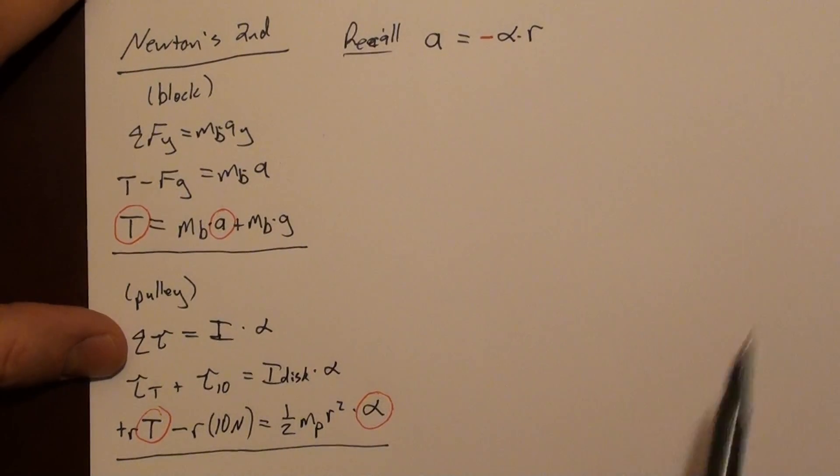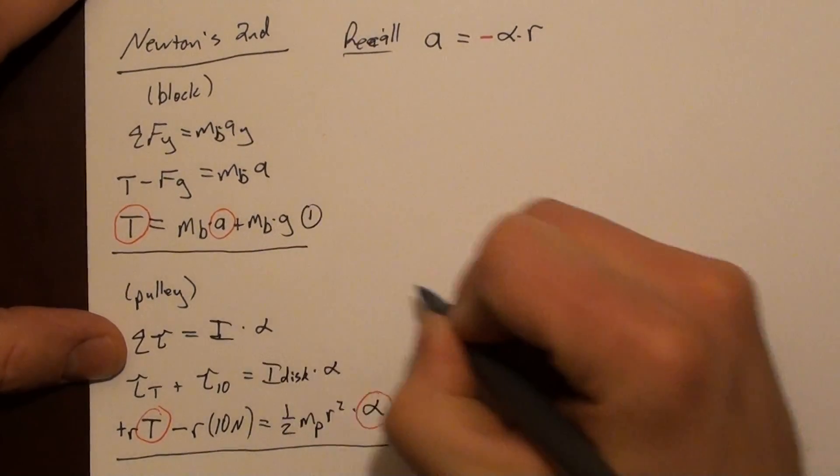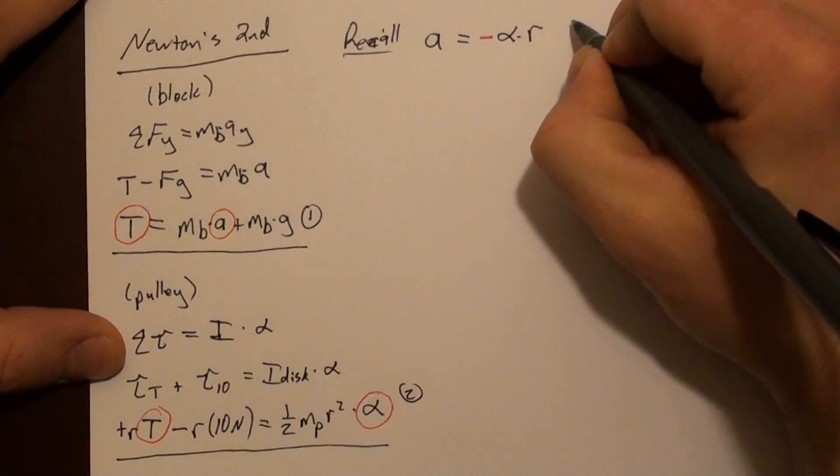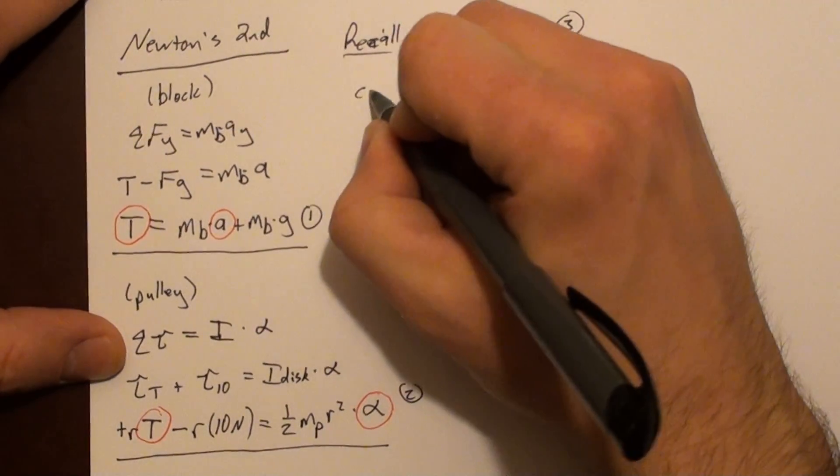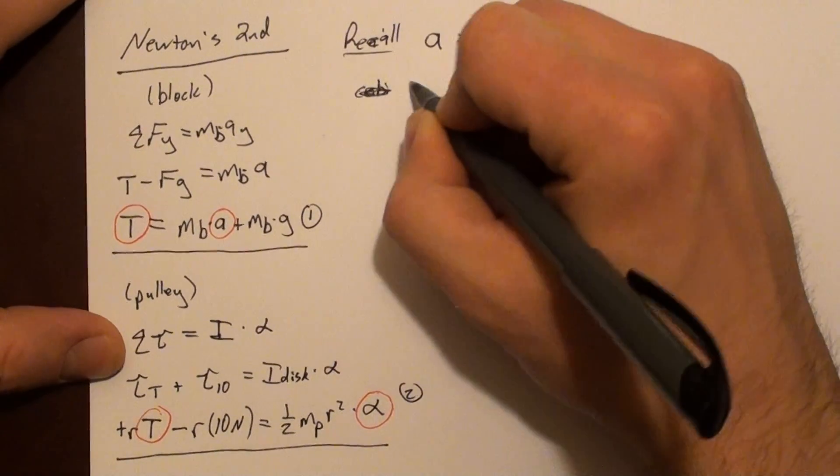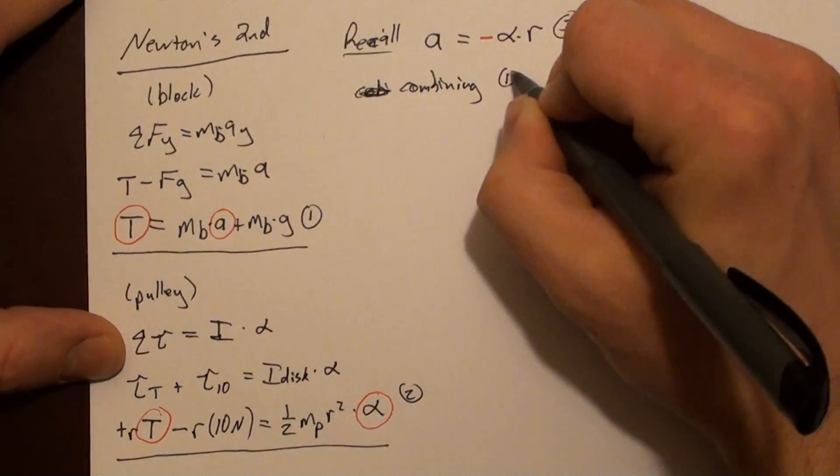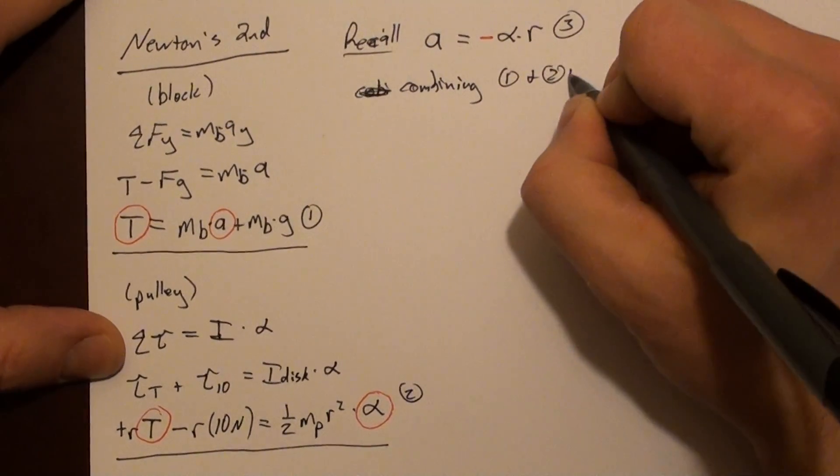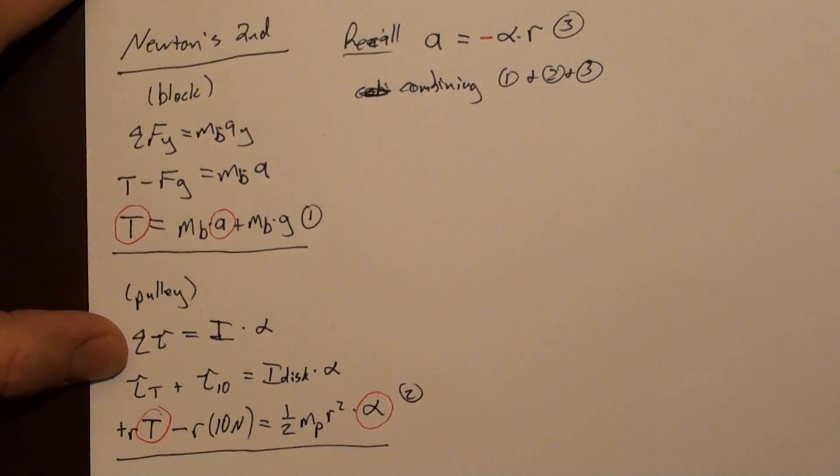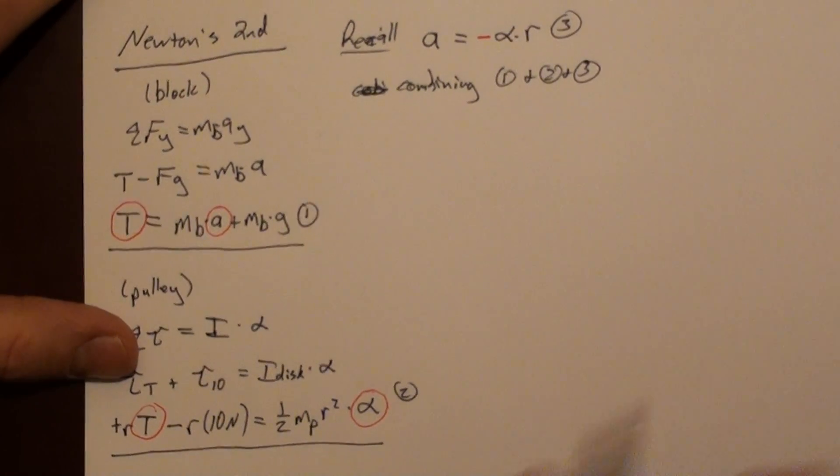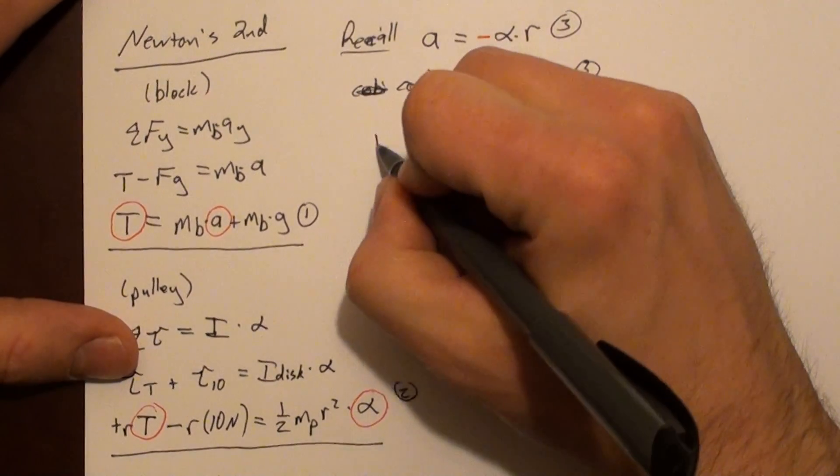So now, I have a third equation that has two of the things I didn't know in it. So I can solve this problem. So I'm going to label these equations 1, 2, and 3. And I'm going to combine 1 and 2 and 3. Specifically, I'm going to write out 2, substituting 1 for t and 3 for alpha. So I think that will make sense when I do it.